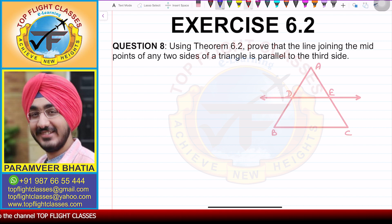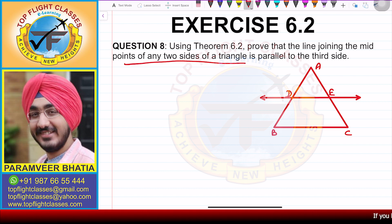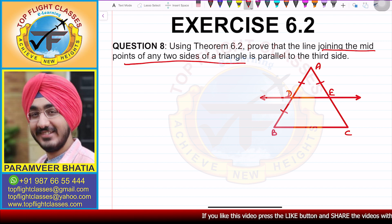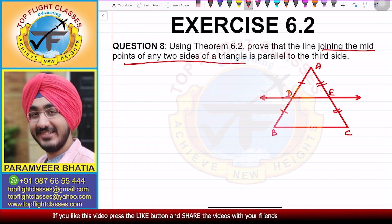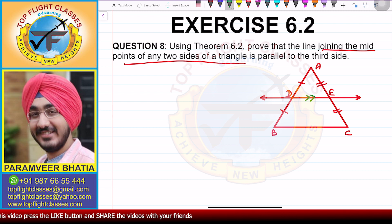If we make a diagram for this, let us say we have this kind of diagram. Here, D and E are midpoints of the two sides of the triangle. That means AD is equal to DB, and AE is equal to EC. This is given to us, and we have to prove that DE is parallel to BC.